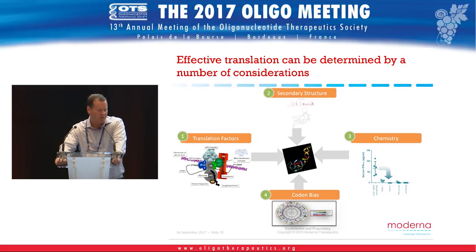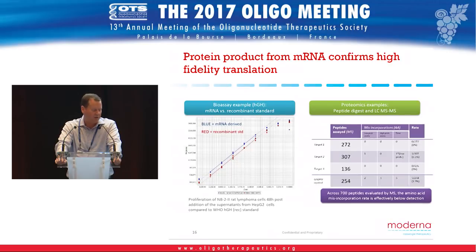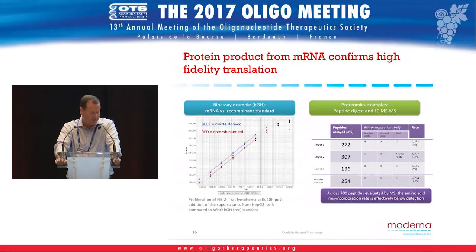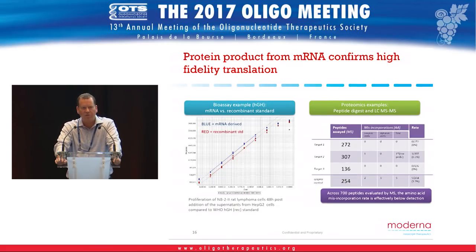We've shown that protein generated from messenger RNA is of high fidelity: in a bioassay for human growth hormone, mRNA-derived protein maintains its activity versus a recombinant standard. We've also looked at peptidic digests across several targets to check for amino acid misincorporations and shown that the misincorporation rate is very negligible — consistent with control rates. This is an important check when introducing chemical modifications to messenger RNA, to ensure you're not interfering with translational fidelity.